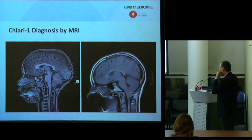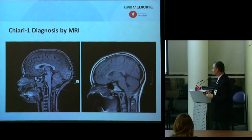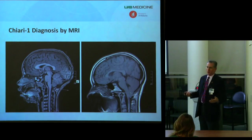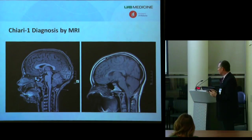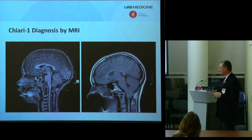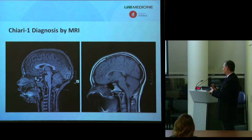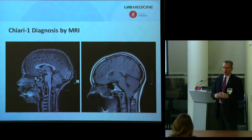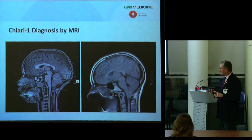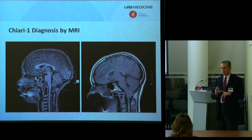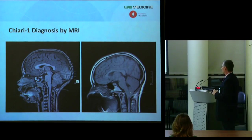The diagnostic test for Chiari malformation — at least by radiographic criteria — is an MRI scan. Sometimes CT scans are obtained first and the foramen magnum area looks crowded, prompting a question of Chiari, but we still get an MRI not only to confirm the diagnosis but also to better understand the relationship between the brain stem, spinal cord, and cerebellar tissue herniating below the foramen magnum.